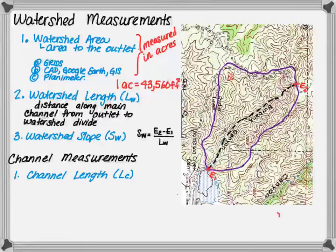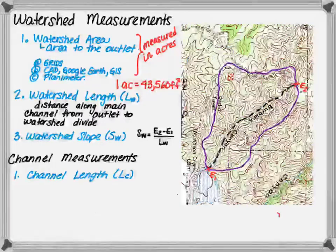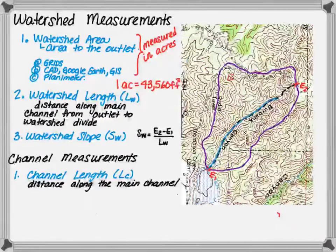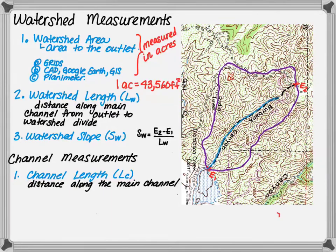Channel measurements can also be made using the topographic map. The channel length LC is highlighted in blue. It is the length along the main channel. Most USGS topos show main channels with a light blue color.